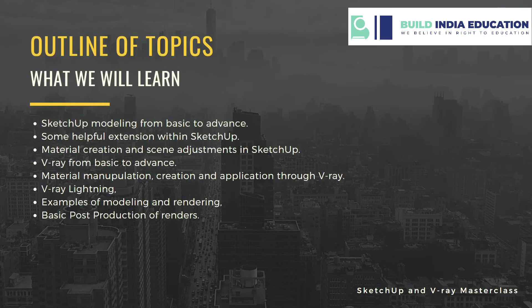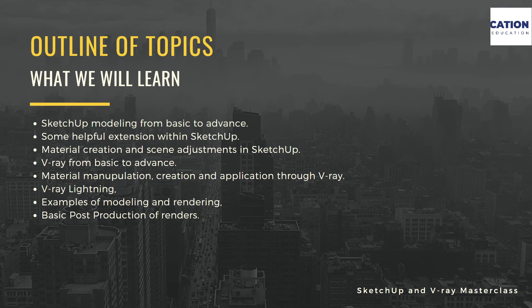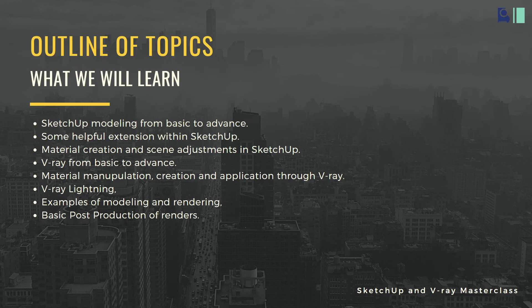Additionally, here's what we will be learning through this course. You will learn SketchUp modeling from basic to advanced, along with some helpful extensions for SketchUp, material creation, and scene adjustments. Coming to V-Ray, you will learn it from basic to advanced, covering all the latest features — including material manipulation, creation, and application through V-Ray, as well as some new V-Ray features. We also have a small section covering basic post-production of architectural renders, which will help you be skillful enough for working on renders.